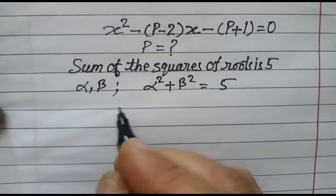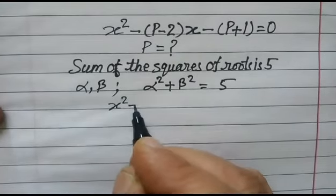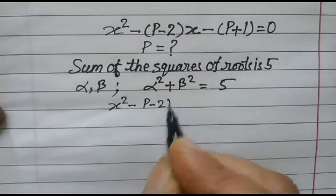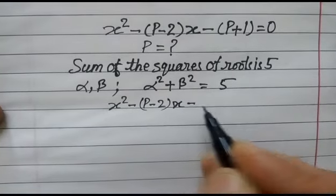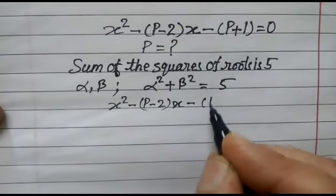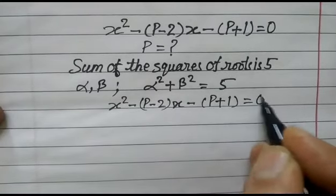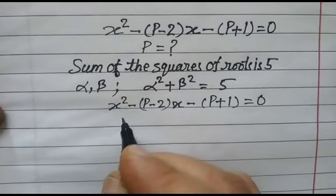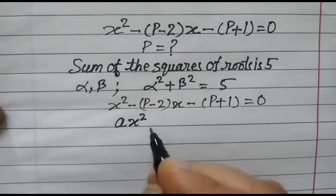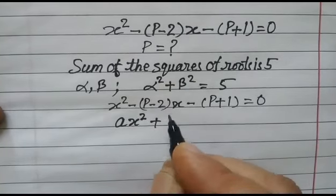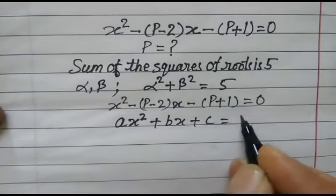We again write this equation: x² - (p-2)x - (p+1) = 0. The standard quadratic equation is ax² + bx + c = 0.